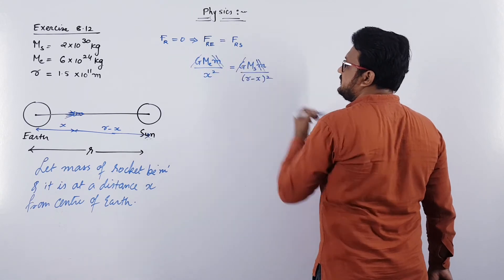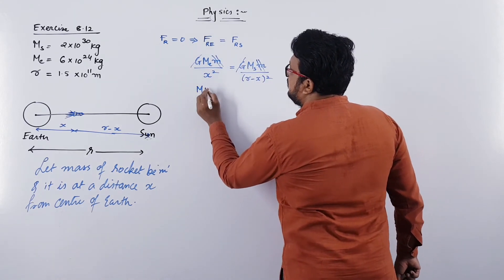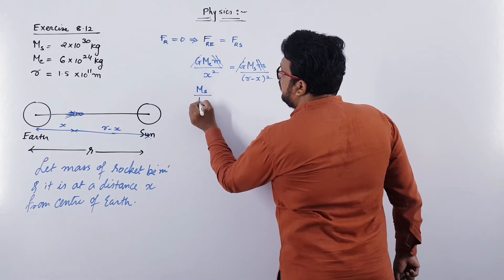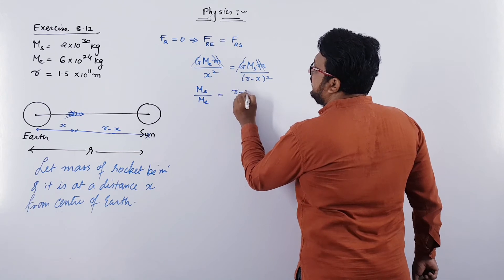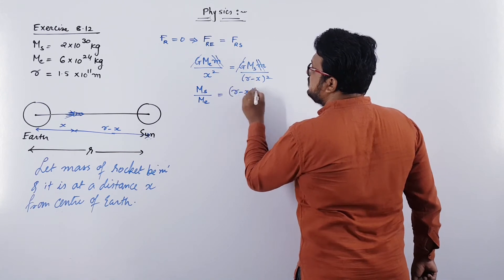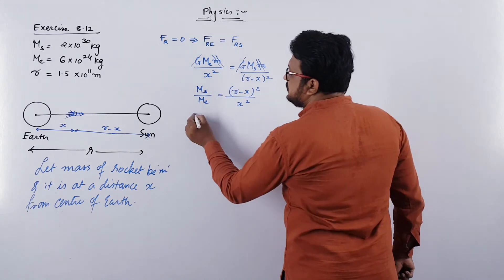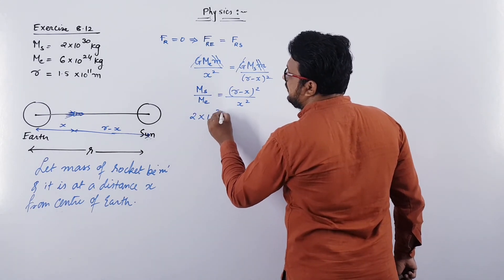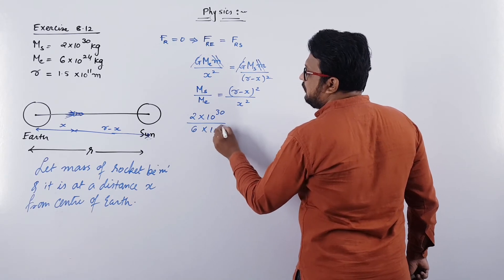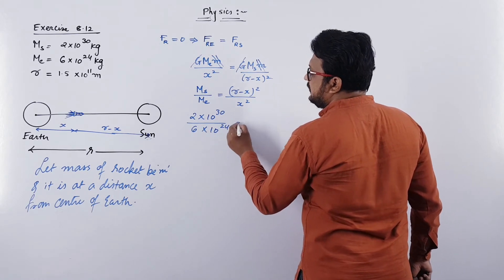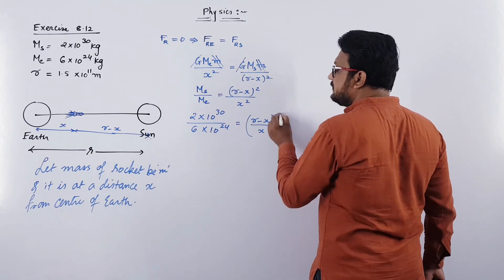So M_Sun / M_Earth equals (r − x)² / x². Now substituting: 2 × 10³⁰ / 6 × 10²⁴ equals (r − x)² / x², which you can write as [(r − x) / x]².